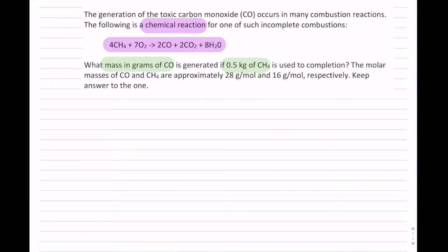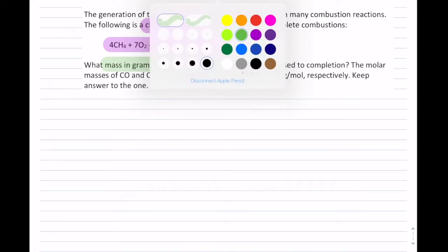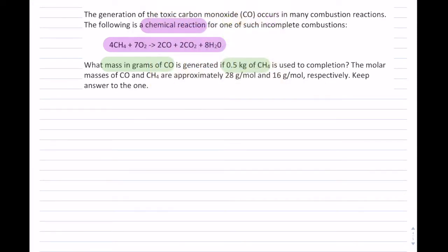They give us the molar masses. So we have molar masses here. That is of CO and CH4. And these are given right here. And it says respectively, which means the first one is CO and the second one is CH4. And we want to keep our answer to the 1.